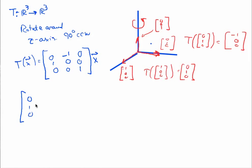Zero, one, zero; negative one, zero, zero; zero, zero, one. Okey-dokey. And I'm going to multiply this by (0,0,1). And let's just see what we end up with.